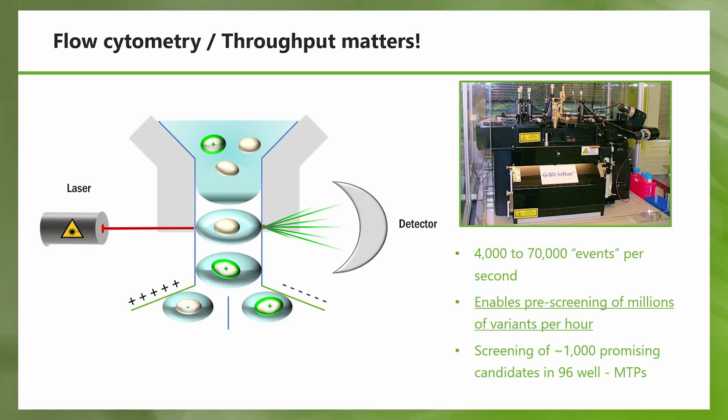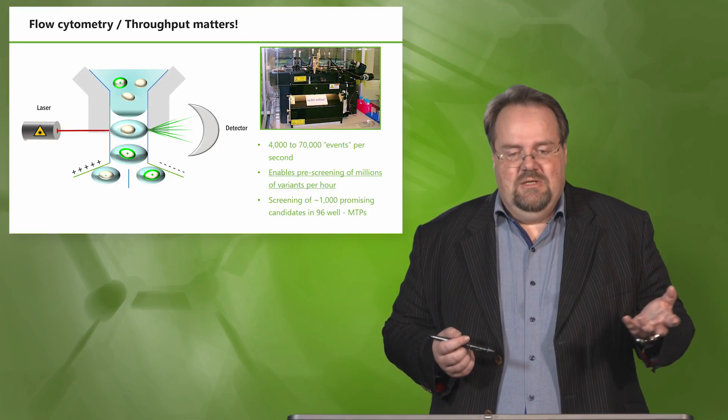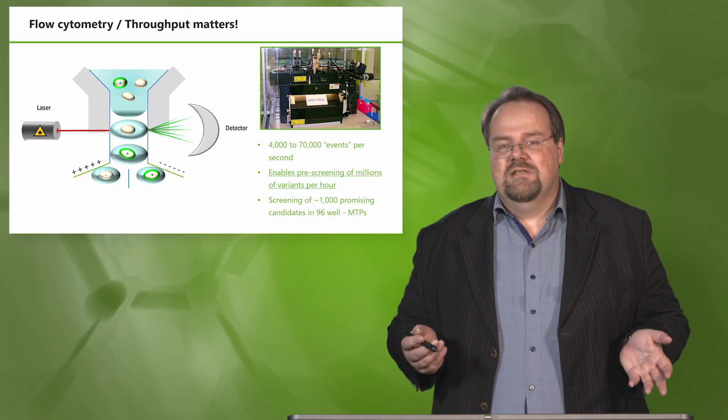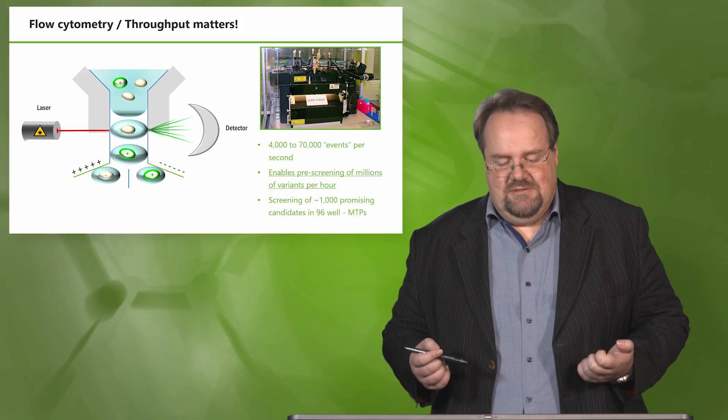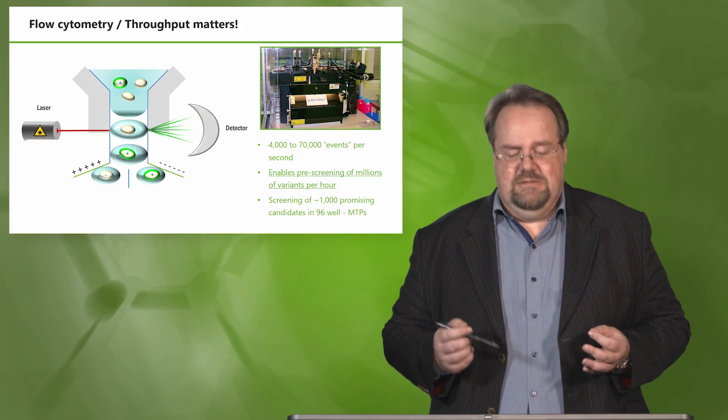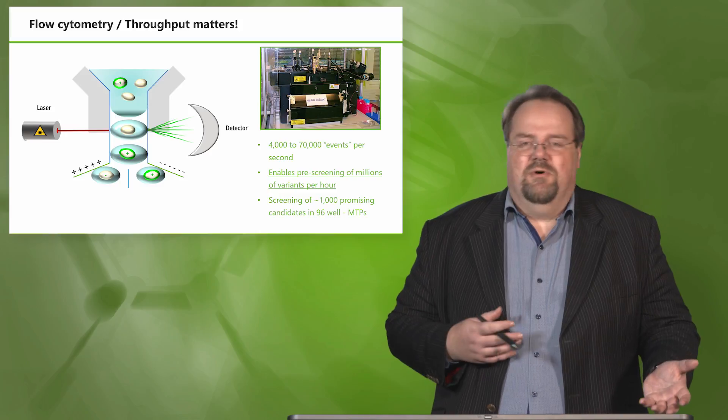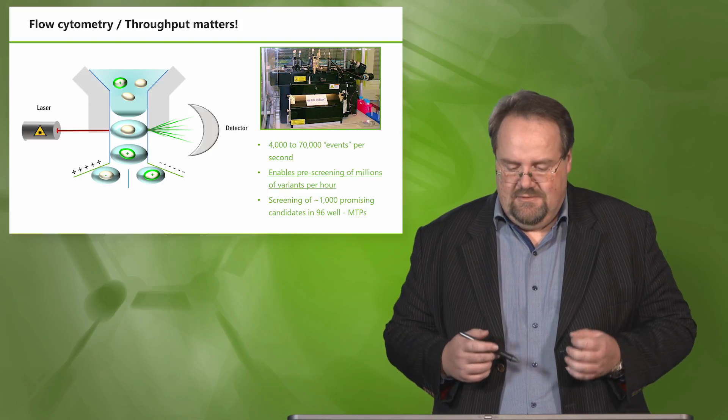Flow cytometry offers you a throughput of several thousand events per second. This means that in one hour you can really screen millions of variants and sort them on the single cell level. So you can use flow cytometry then best as a prescreen to sort out from a huge library the best and the most promising 1000 clones in microtiter plates. And then you perform your standard microtiter plate screening to compare and find the best variants. Because distinguishing between the individual variants in a flow cytometer that show a signal is difficult, because you always measure on a single cell, they might be in a different metabolic state. But as a prescreening system, it's a really very good method.